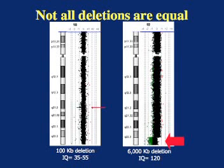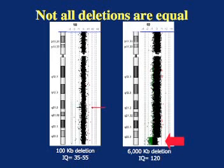By now, I hope you have concluded that some genes do not have abnormal consequences when they are in some copy number other than two. But you could rightfully also conclude that some genes have major consequences when they are in an abnormal copy number, and some genes have minor consequences. Here's an example of two individuals with deletions of 18q. The individual on the left has a deletion that includes a single gene, yet this child is significantly developmentally delayed. The individual on the right has a deletion that is 60 times bigger and includes 15 genes, yet this individual has an IQ that is well above average. This brings us to our fundamental challenge: to identify the key genes that cause a functional difference when they are present in an abnormal copy number.